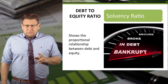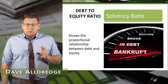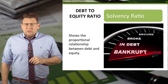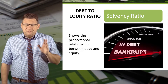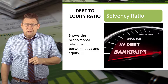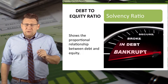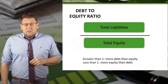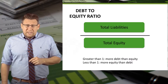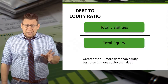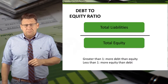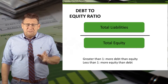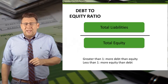The debt-to-equity ratio tells us the proportional relationship of total liabilities to total equity. This ratio is a variant of the debt ratio and is a measure of solvency. It is calculated as total liabilities divided by total equity, and it tells us whether a company's assets are financed more by debt or by equity.